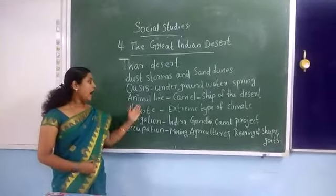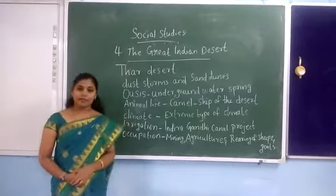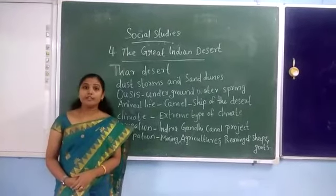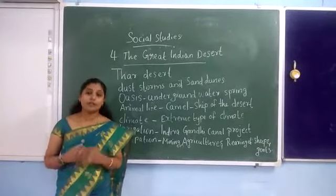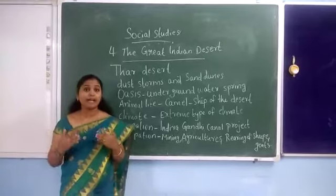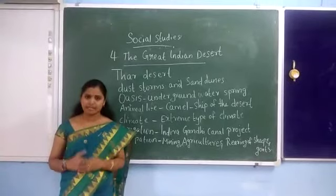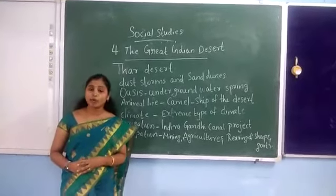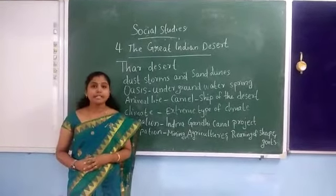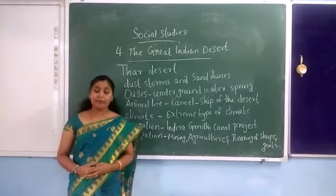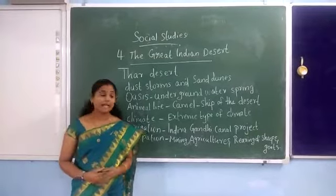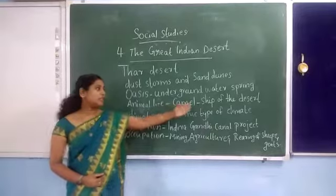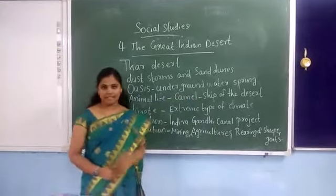Next you can see animal life. Camels are commonly used for transportation — they can walk easily on the sand. Camels mainly provide meat, milk, and excess food. Because of that, the camel is also known as the ship of the desert.